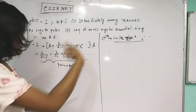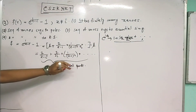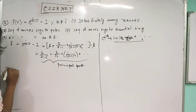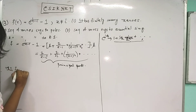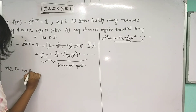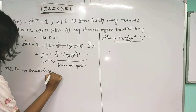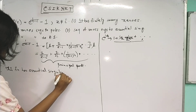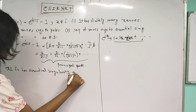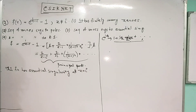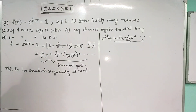Similarly, this function f(z) = e^(1/(z-i)) - 1 has an essential singularity at z = i. Now, what is the question asking? That's important.